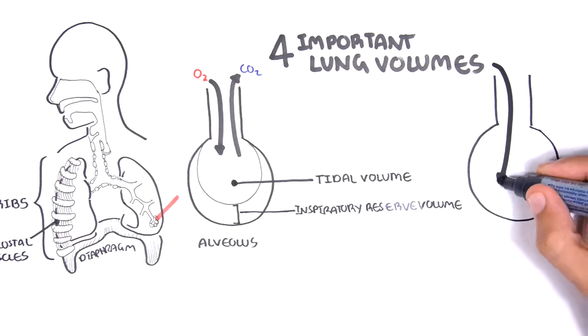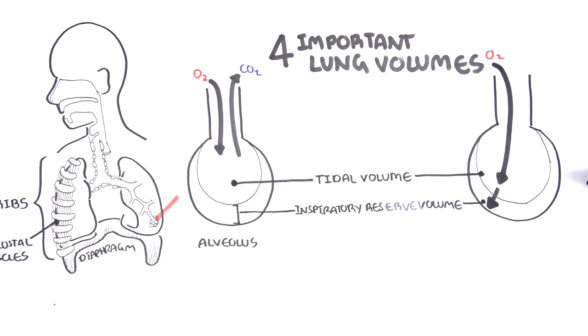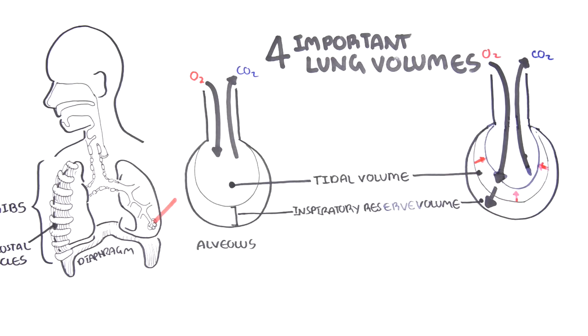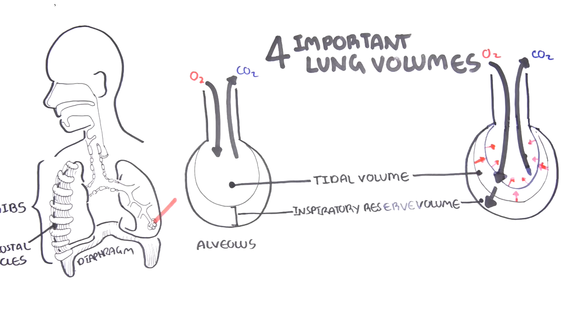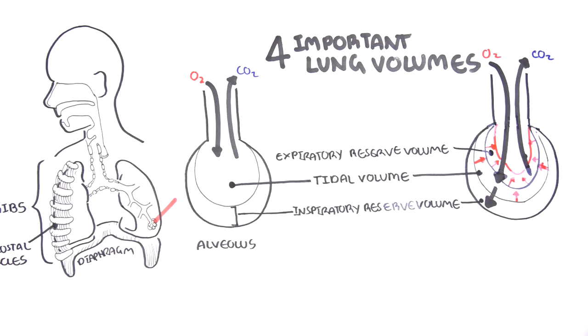So again we're looking at the four important lung volumes. Here again is an example of your tidal volume and this is your inspiratory reserve volume. We can also exhale more than usual. The amount of air we can exhale in addition to the tidal volume is the expiratory reserve volume. This is typically 1.5 liters.